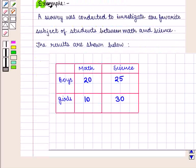Let us consider the following example. A survey was conducted to investigate the favorite subject of students between maths and science. The results are shown below. The table shows that 20 boys like maths and 25 like science.